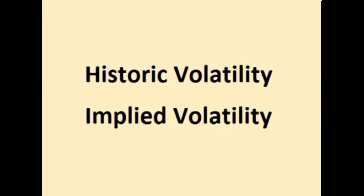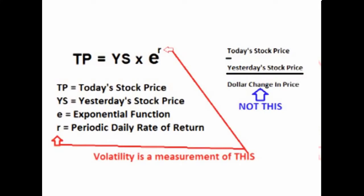Volatility can be broken into two parts: historic volatility and implied volatility. Historic volatility is the volatility of the periodic daily returns. The periodic daily return is the rate that price changes each day using continuous compounding. Each day the price of a stock is the previous day's price times e raised to some value — that value is the periodic daily return.